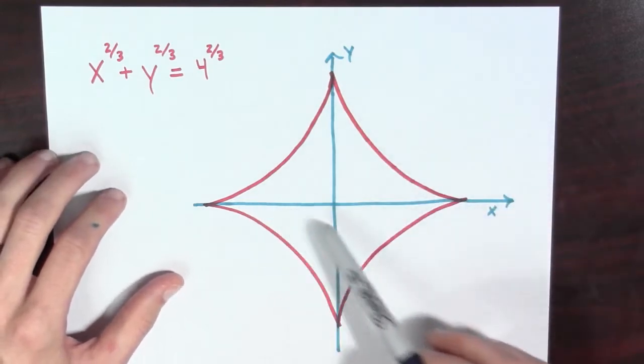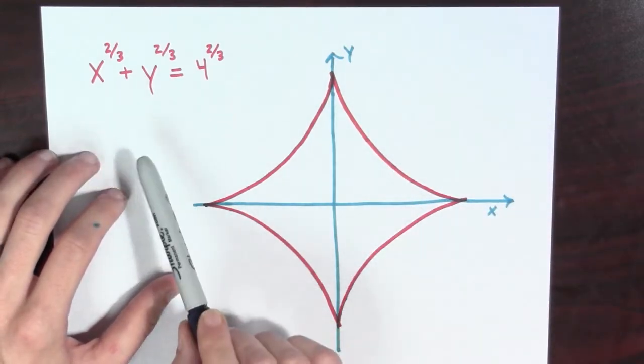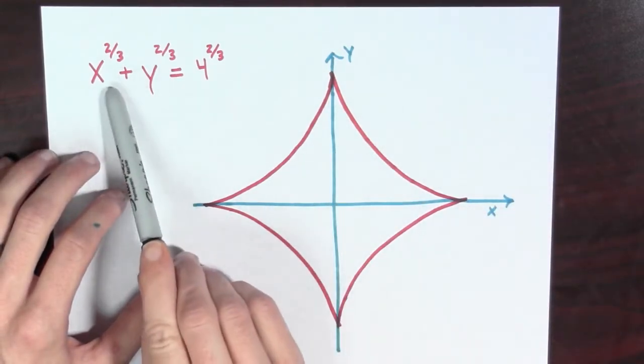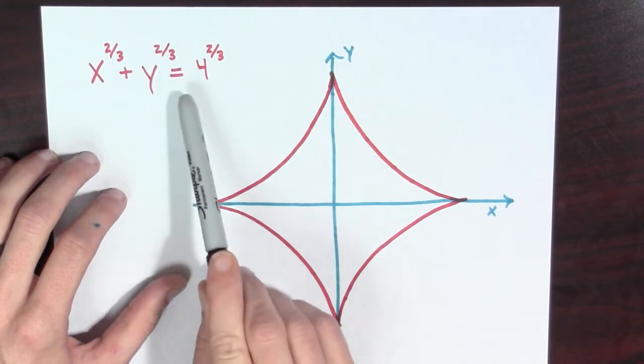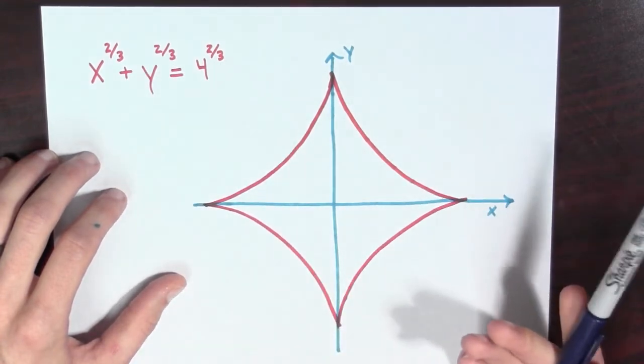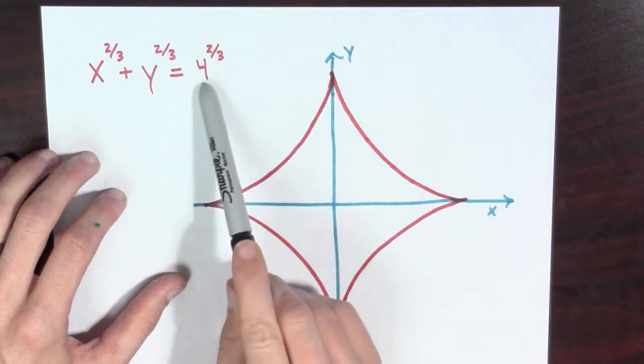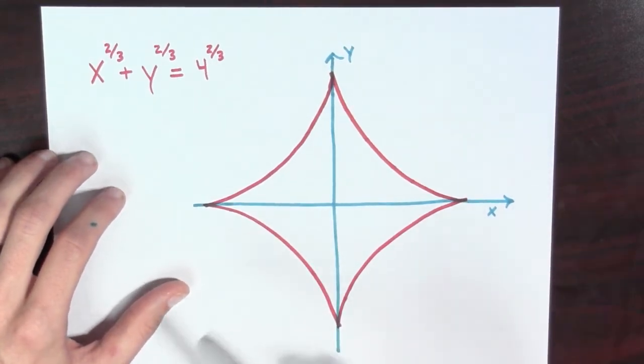Here we see a plot of the asteroid. This one's defined by x^(2/3) + y^(2/3) = 4^(2/3). In general, the asteroid has a^(2/3) on the right-hand side.